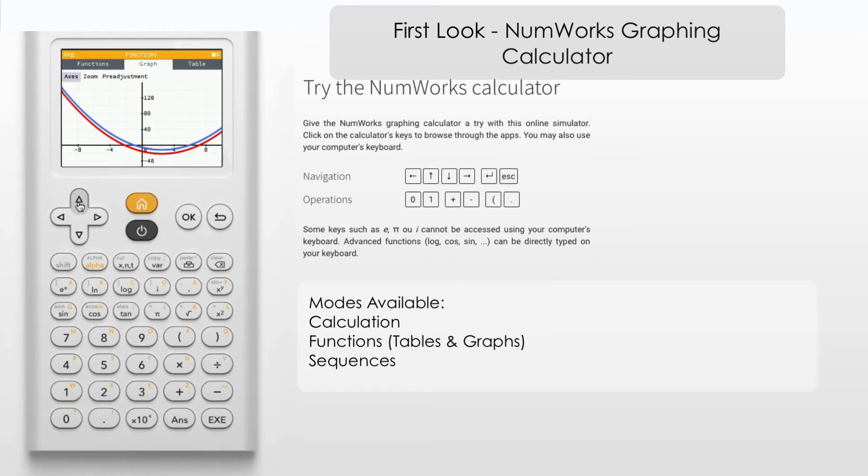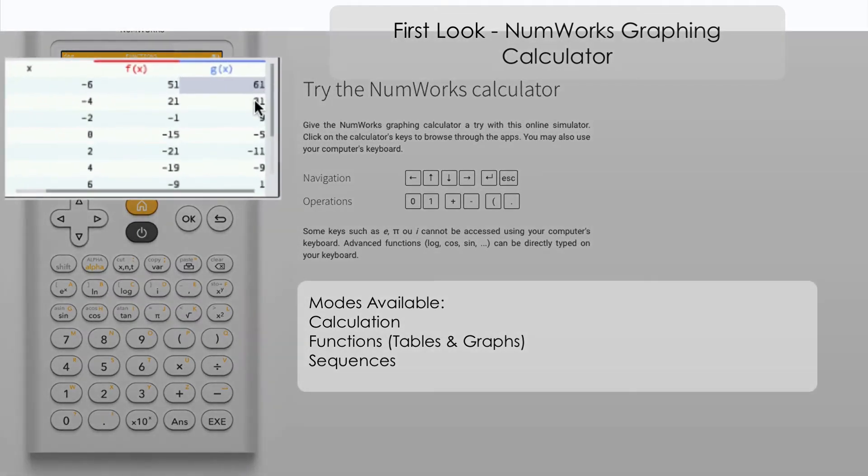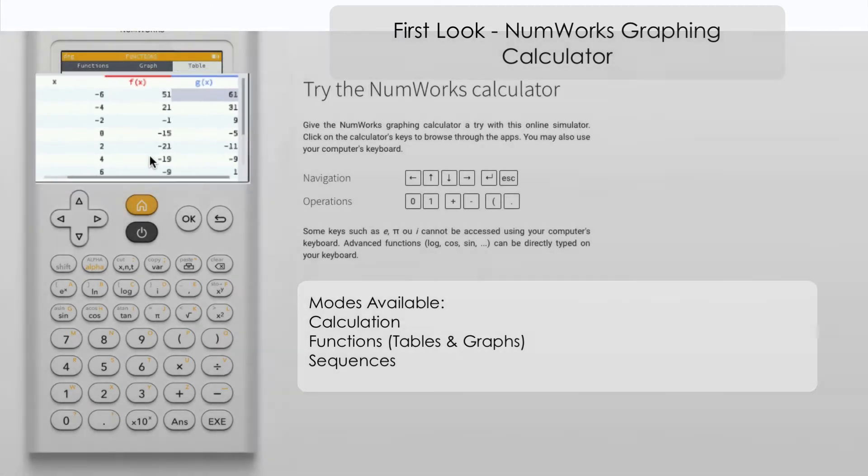Let's look in table mode, see if we can compare the two functions. Yes we can, so we can see that we've got a difference of 10 between the two sets of functions there. So that's very good, able to do the side-by-side comparison with those.